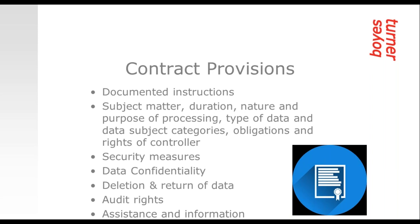One example of where GDPR goes further than current practice is in the case of sub-processing or sub-contracting by the processor to a third party. GDPR prevents processors from sub-contracting without prior written consent of the controller, which can be specific or general consent. Where consent has been obtained, the processor must inform the controller of any changes, and the sub-contract must include the same data processing provisions as in the main contract. This is going to pose difficulties for cloud-based solutions and for data processors who have long and dynamic supply chains.